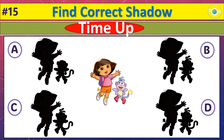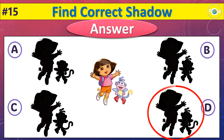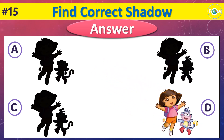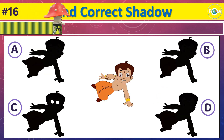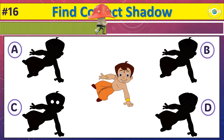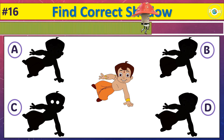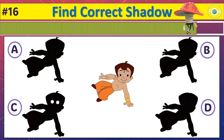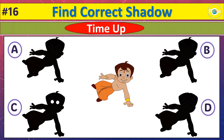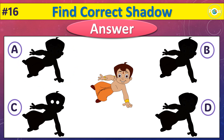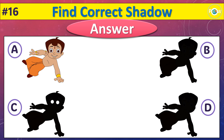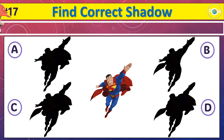Time up. And the correct shadow is D. Time up. And the correct shadow is D. Time up. And the correct shadow is A. Which is the correct shadow of this cartoon?